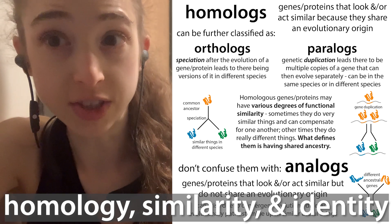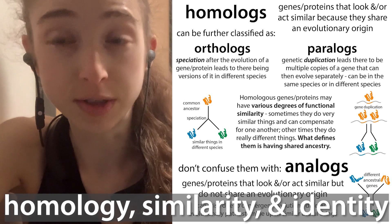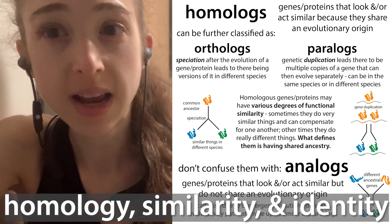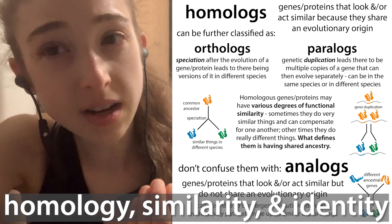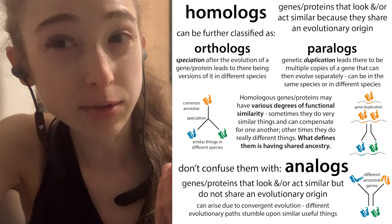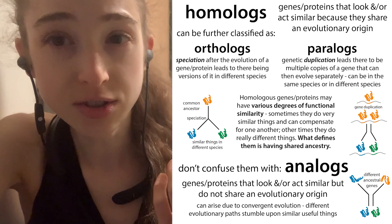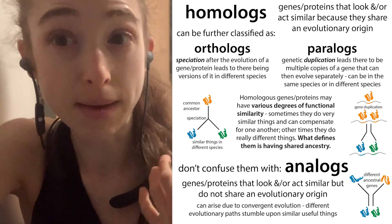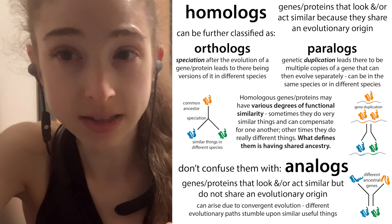You have multiple versions of a gene or the corresponding proteins, and if these come from the same genetic ancestor, we call them homologues.